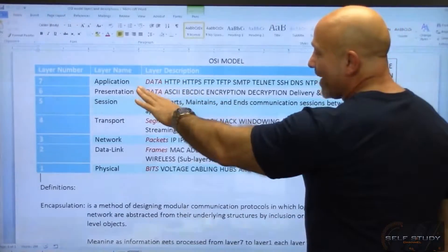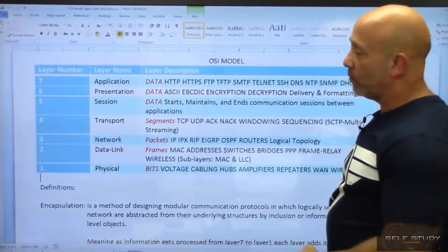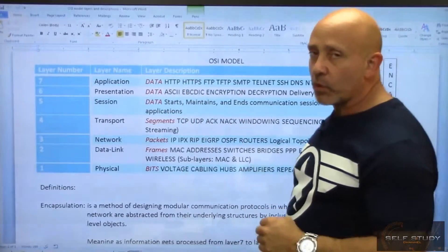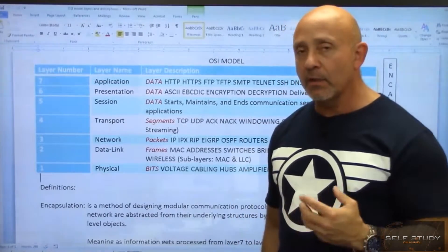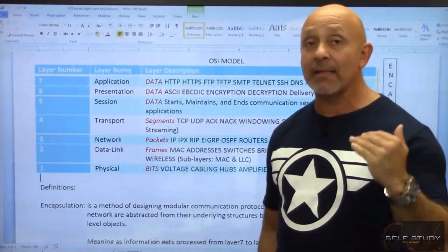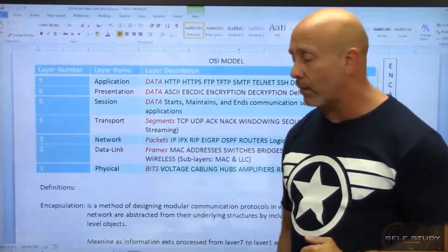The ones in red, which you see data, data, data, that is what's called a PDU, a protocol data unit. That is what the book defines as it talks to its peer layer.